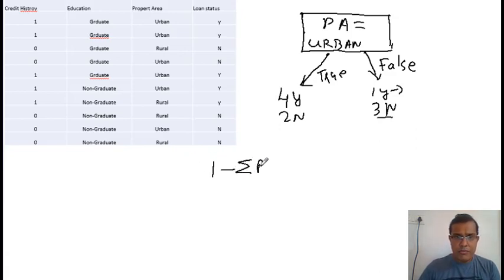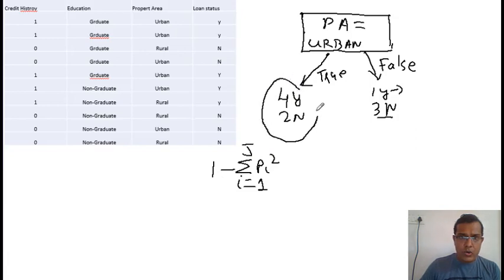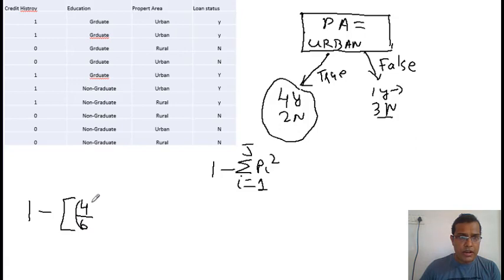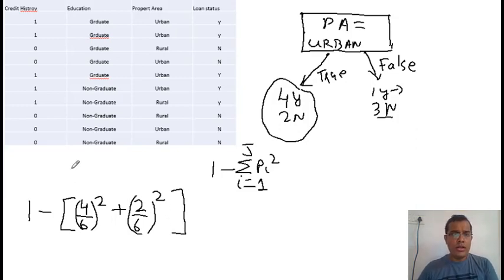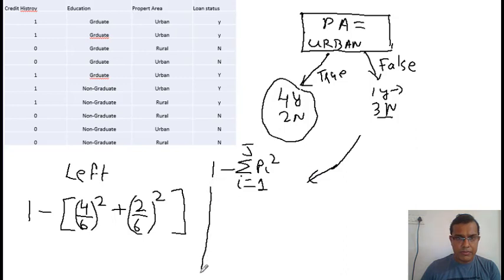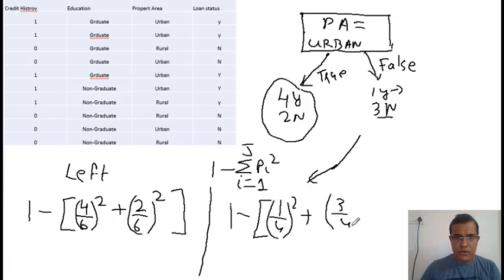Now let's apply the formula: 1 minus summation of p_i squared. On the left side with four Y and two N, the Gini score is: 1 minus (4/6)² minus (2/6)², and the final value comes out to be 4/9. On the right side with one Y and three N, the Gini score is: 1 minus (1/4)² minus (3/4)², and the final value comes out to be 3/8.